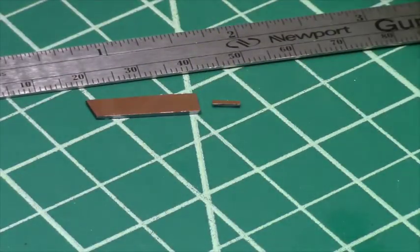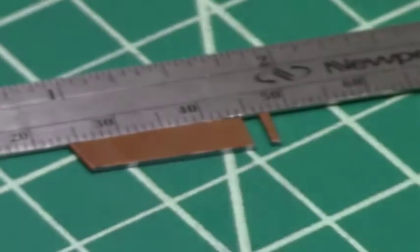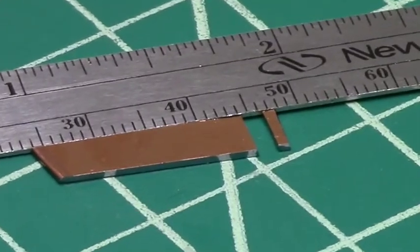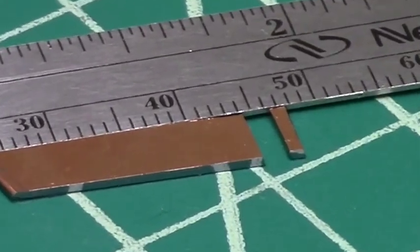In this case, the flip scribe was used to scribe across the entire width of the backside. This prevents any particles from getting on the front side of this thin film. The small sample pliers were used to cleave the sample.